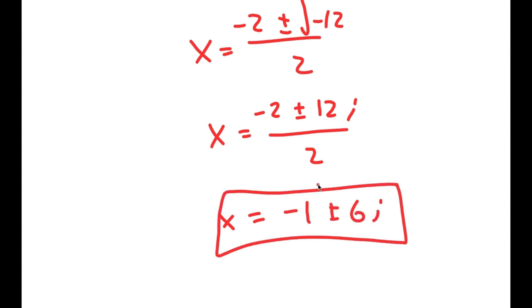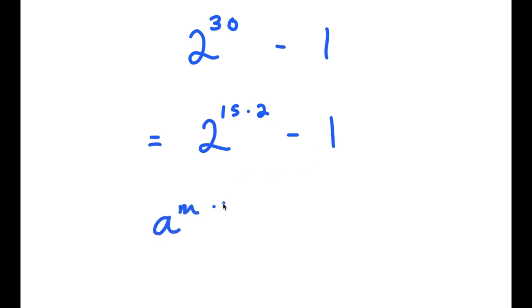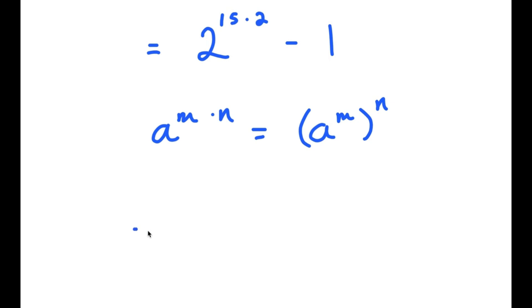So those are the two additional complex solutions to this equation. Now in this next problem, I'm going to solve 2 to the power of 30 minus 1. To do this, I'm going to rewrite it as 2 to the power of 15 times 2 minus 1. Using the rule that a to the power of m times n equals a to the power of m to the power of n, we get 2 to the power of 15 squared minus 1.